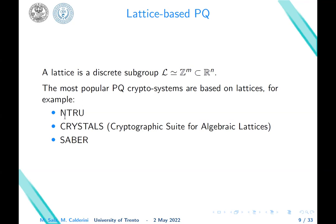A lattice is a discrete subset L of Z^m, which we see inside R^n. The most popular post-quantum crypto systems are based on lattices. For example, NTRU, Crystals, cryptography suite for algebraic lattices, and Saber. We don't claim that these are the best, we just state that these are the most popular.